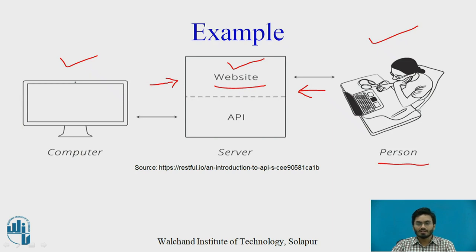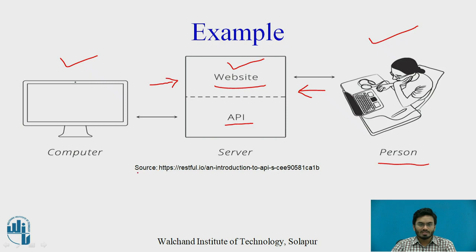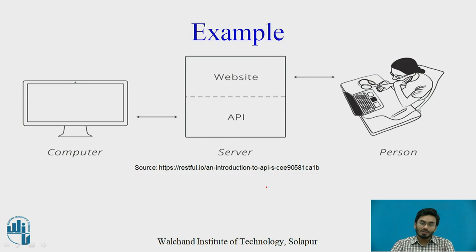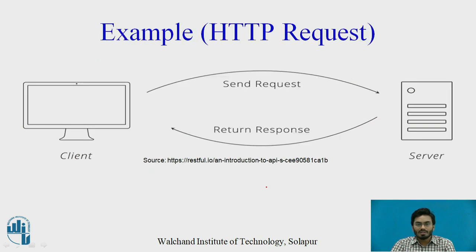Whenever you try to enter the username and password, what happens in the back end is that the URL — the uniform resource locator — is going to contain the API. I have adopted this particular diagram from a link called restful.io. It has a website and that website has a main directory inside which you have another folder with a particular naming. So whenever I try to access a website I need to simply go through the login part of that particular website.